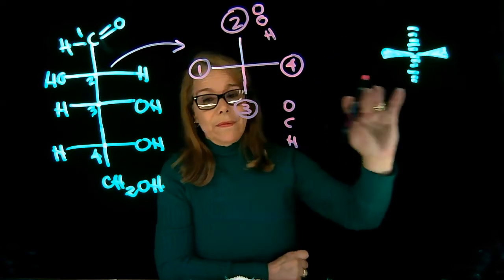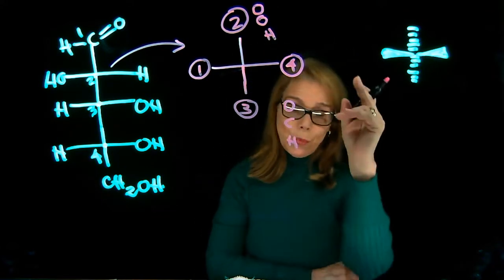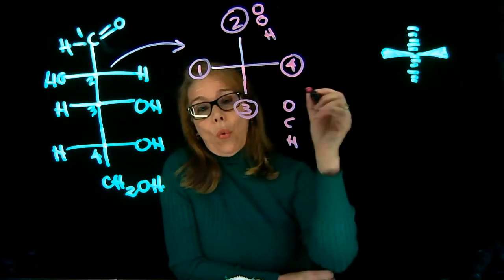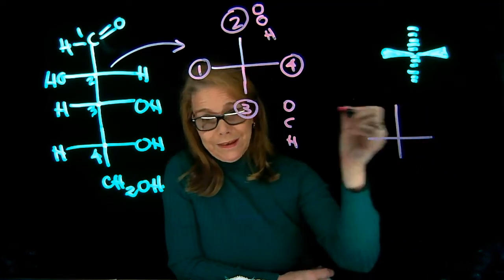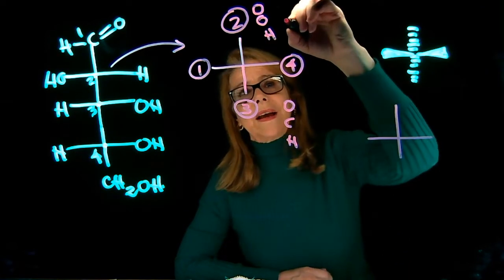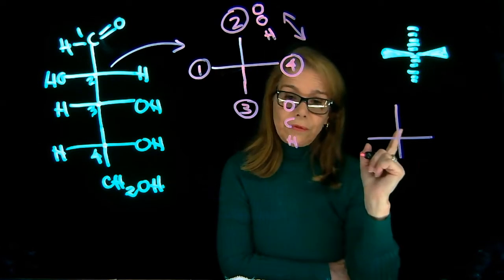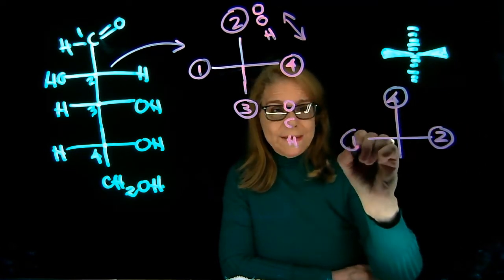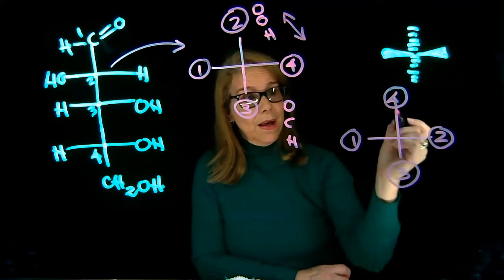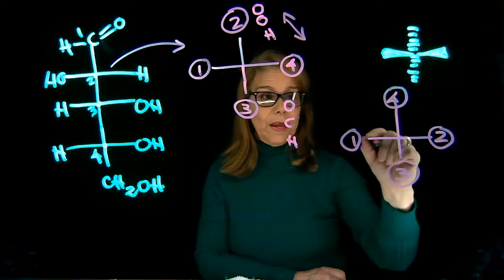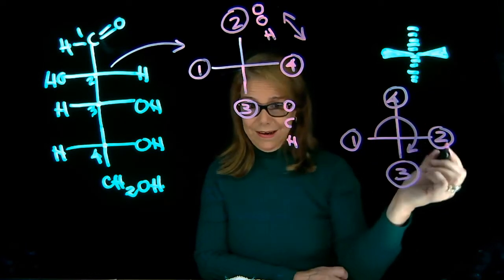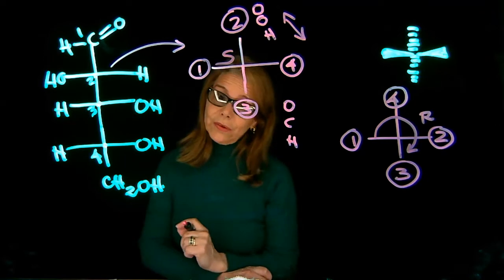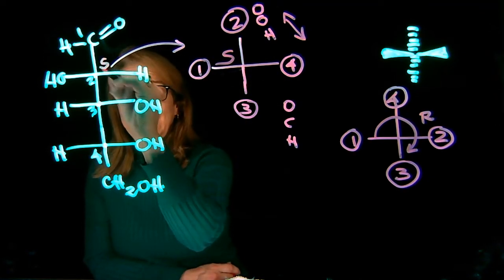Once I have established my priorities, I see that my lowest priority group is pointing towards me. The lowest priority group needs to be away from your view. So I'm going to do one switch, interchanging these two groups. Remember that one switch will change the absolute configuration. Now I have the lowest priority group away from my view. Going 1, 2, and 3, it's R here, but in the original configuration it's going to be S. So carbon 2 configuration is S.